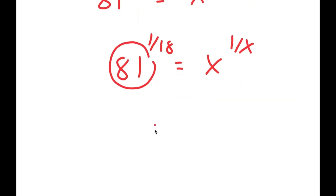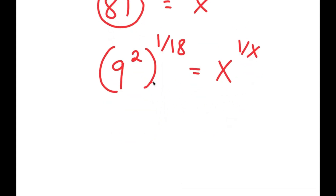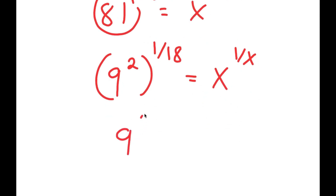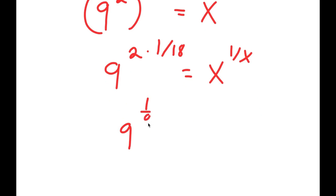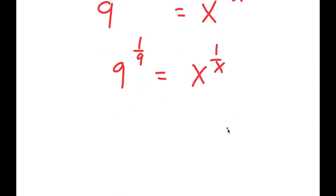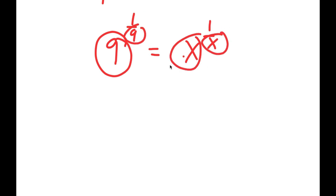Now, 81 is the same thing as 9 squared. So I'm going to rewrite this as 9 squared to the power of 1 over 18 is equal to x to the power of 1 over x. This is the same thing as 9 to the power of 2 times 1 over 18, and 2 times 1 over 18 is 1 over 9. So I get 9 to the power of 1 over 9 is equal to x to the power of 1 over x. Notice how this is in the form: a number to the power of 1 over that same number equals x to the power of 1 over x, meaning x is equal to 9.